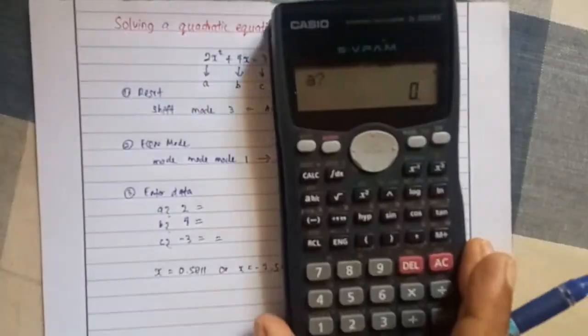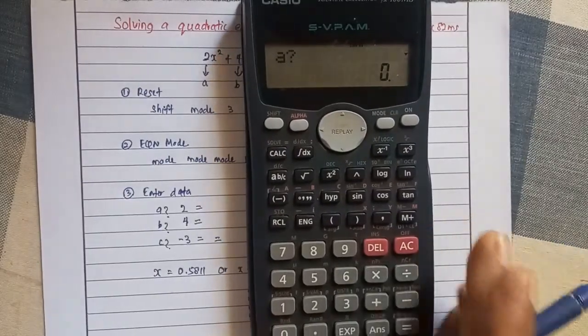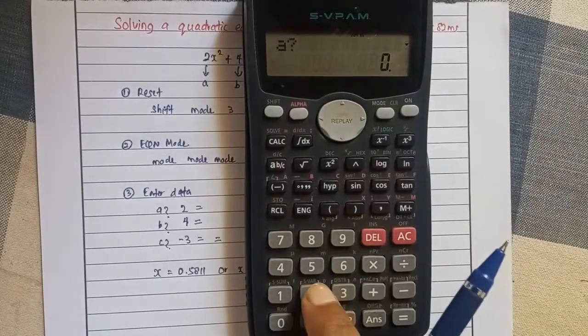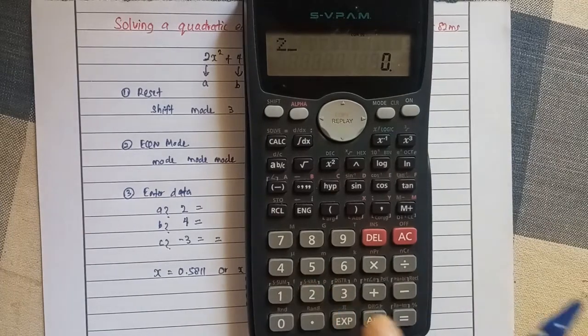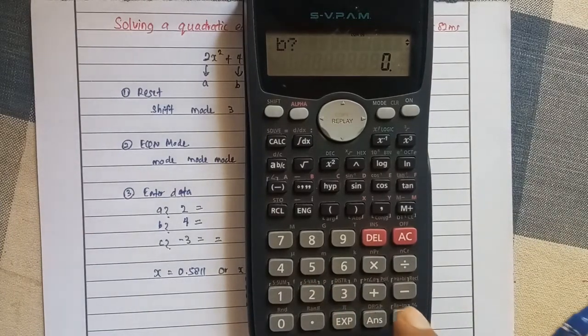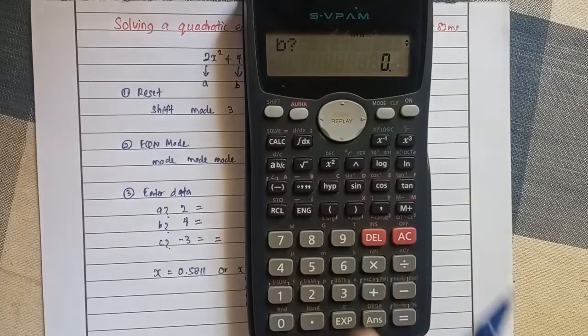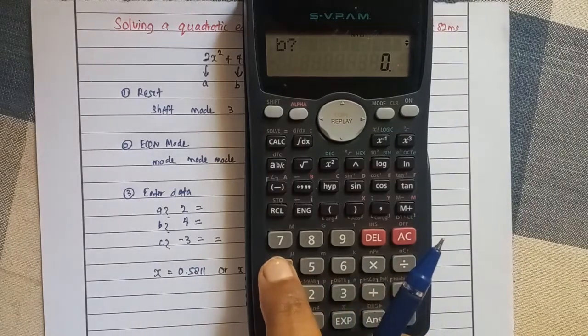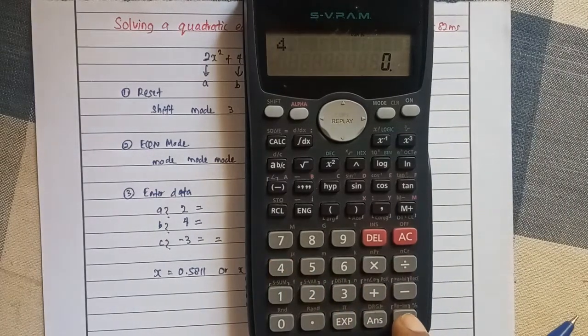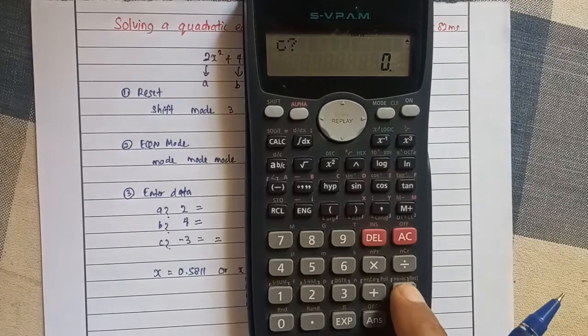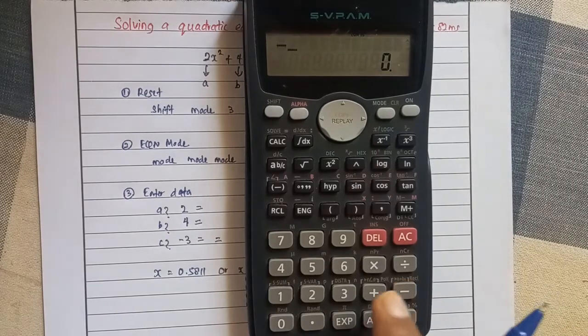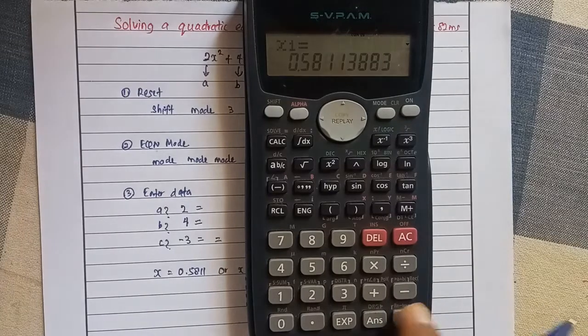So here, the value of A is 2, so we can press number 2 and then equals. The value of B is number 4, then we can press number 4 and then equals. The value of C is minus 3, so we can press minus 3 and equals.